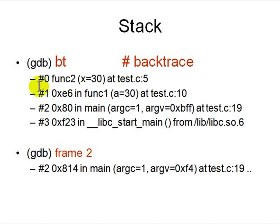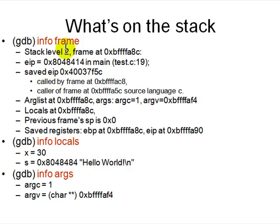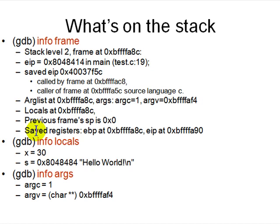With the frame command you can change which frame you are examining — say frame 2 to point to frame number 2. For more information about a stack frame, say info frame: it shows the stack frame level, address, instruction pointer, and that it was called from main at test.c line 19. Info locals and info arguments give you local variables and arguments.